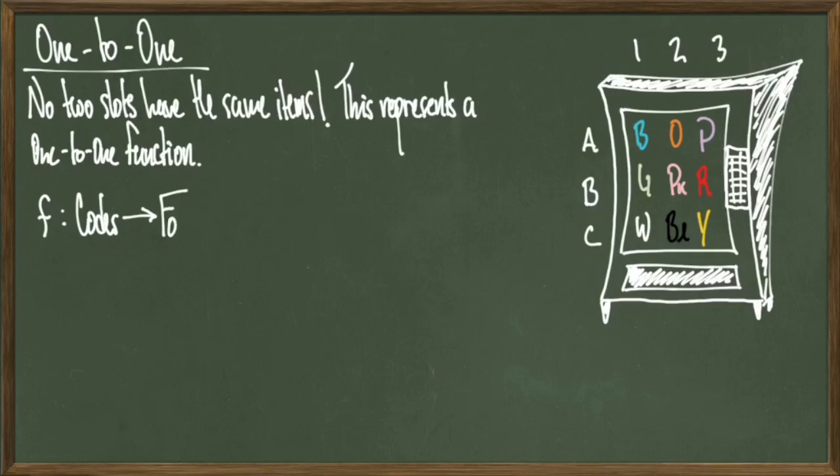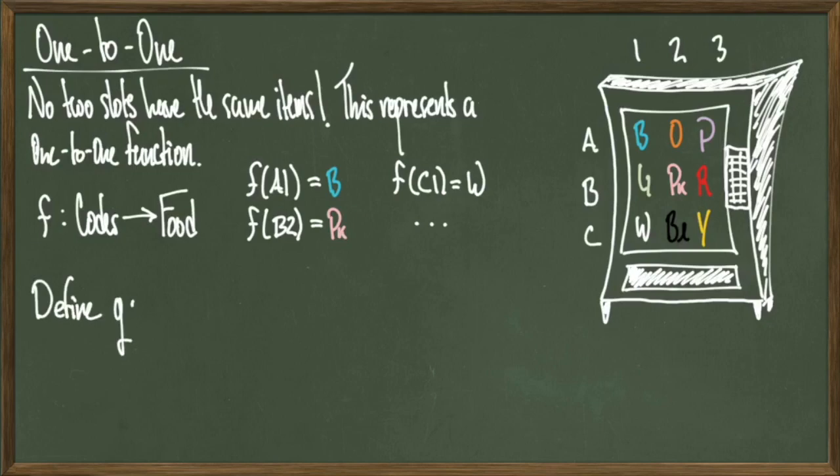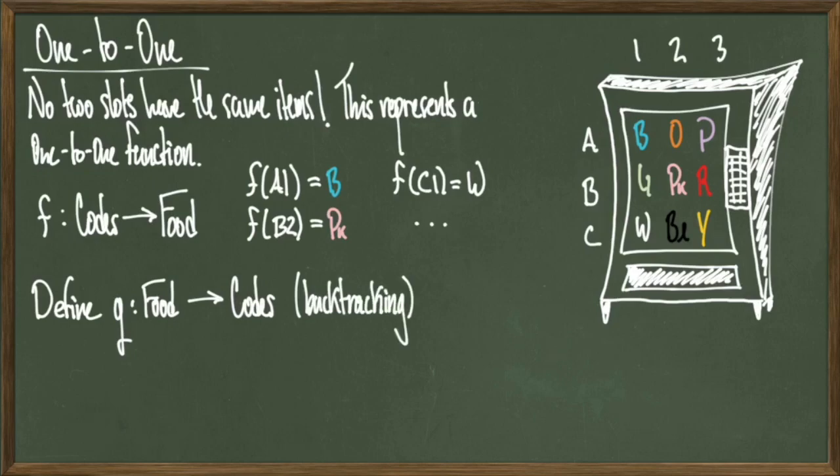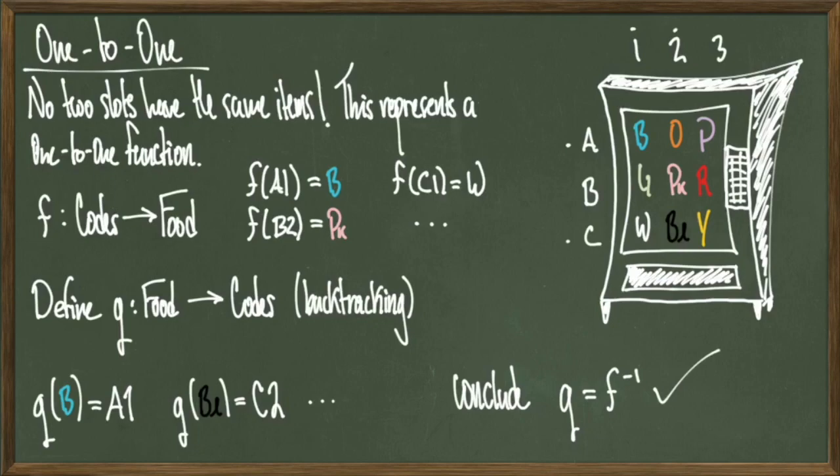This is going to mean that the correspondence between my codes and my food items are completely unique. To run through this more precisely, let f be the function that sends codes to food. We know that f of A1 gives me blue, f of B2 gives me pink, f of C1 gives me white, and so on. But since all the slots are distinct, I can make a backwards function that I'll call g that sends food to codes. In other words, this is just a backtracking function, so to speak. In so doing, I notice that g of the blue item gives me A1, g of the black item gives me C2, and so on.